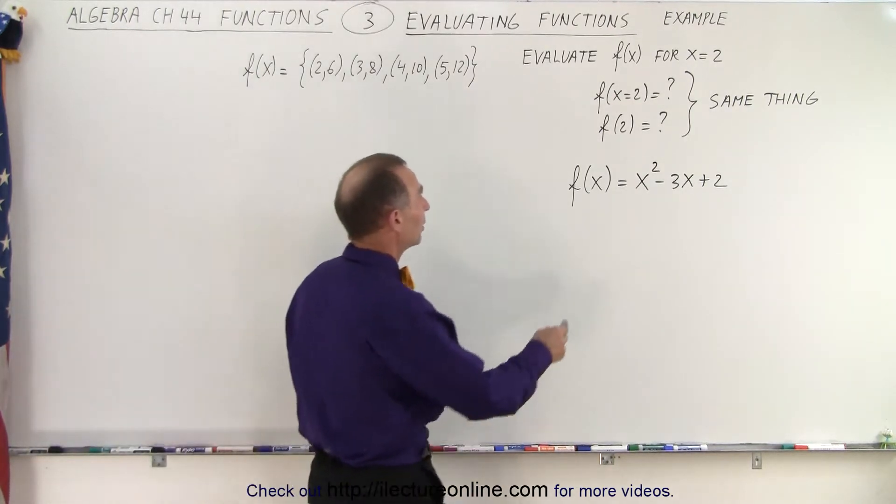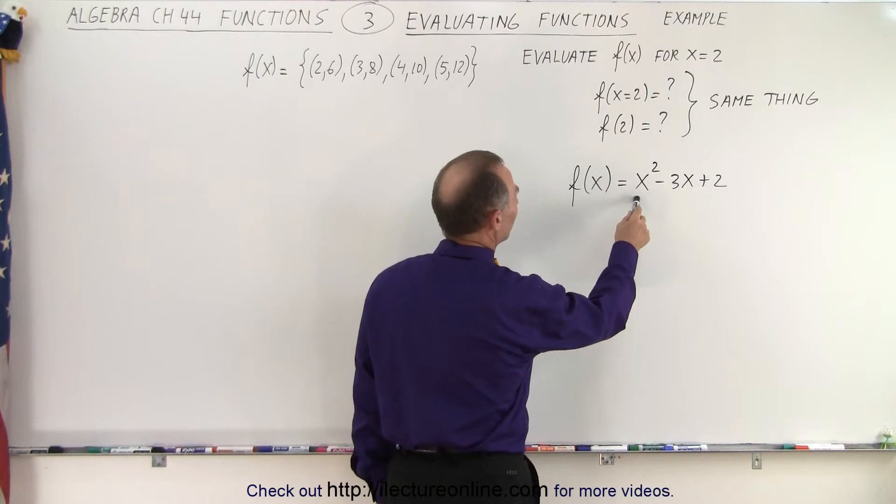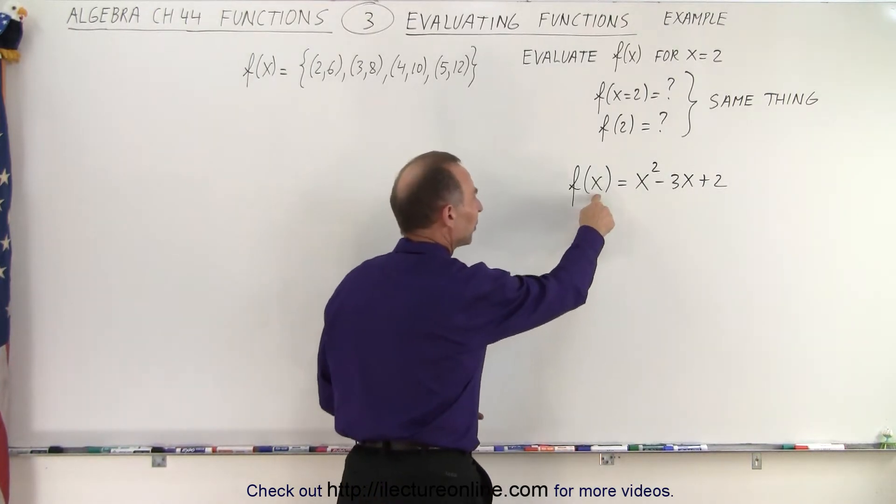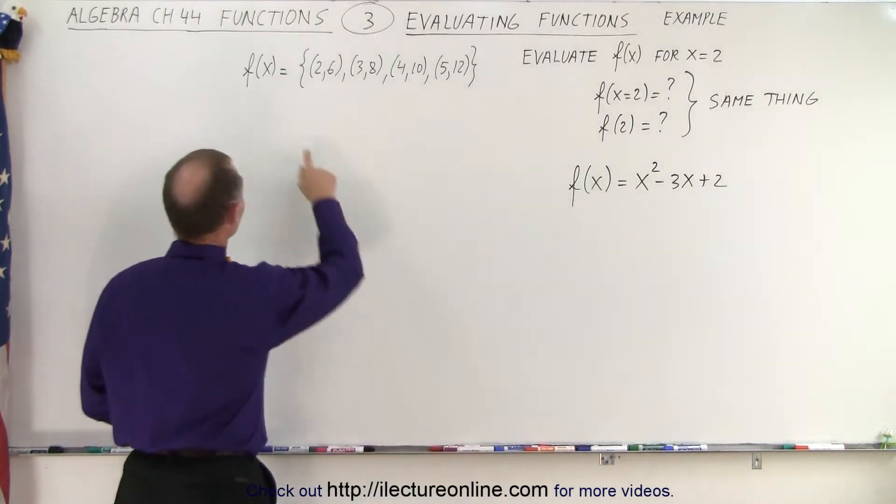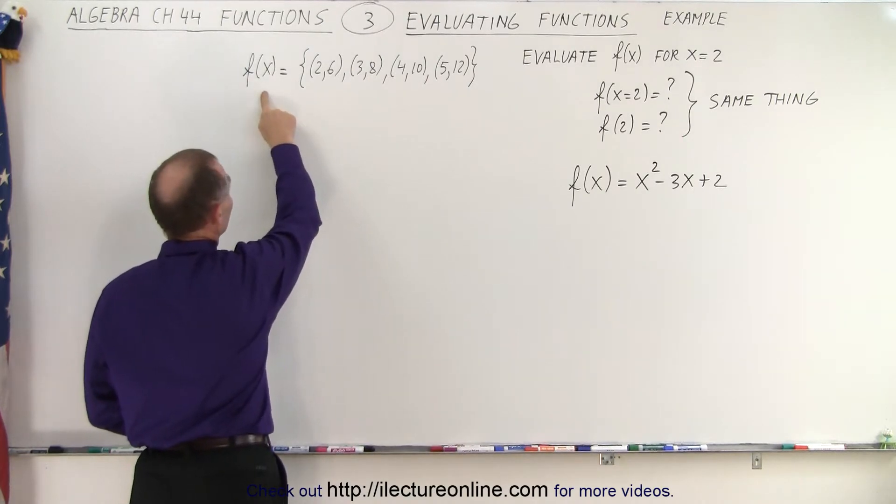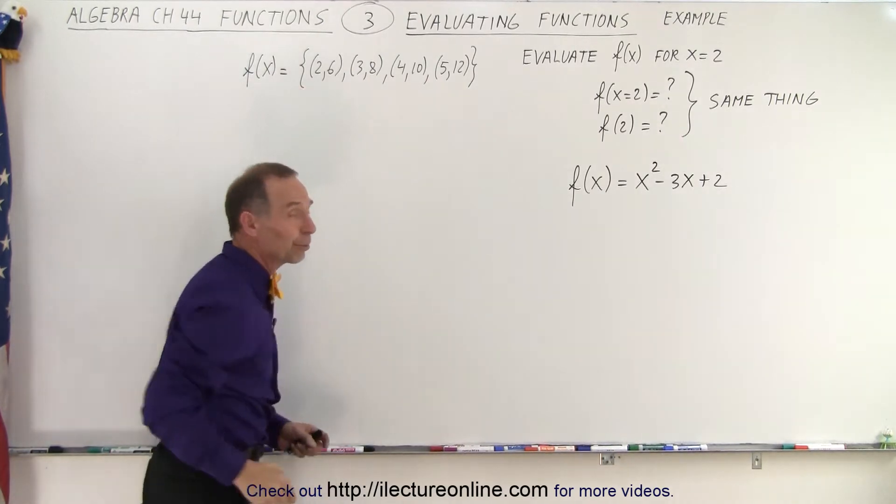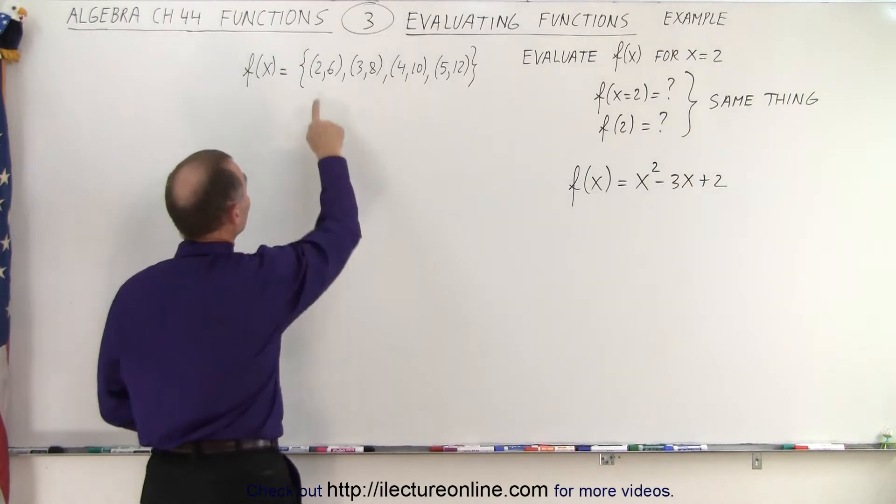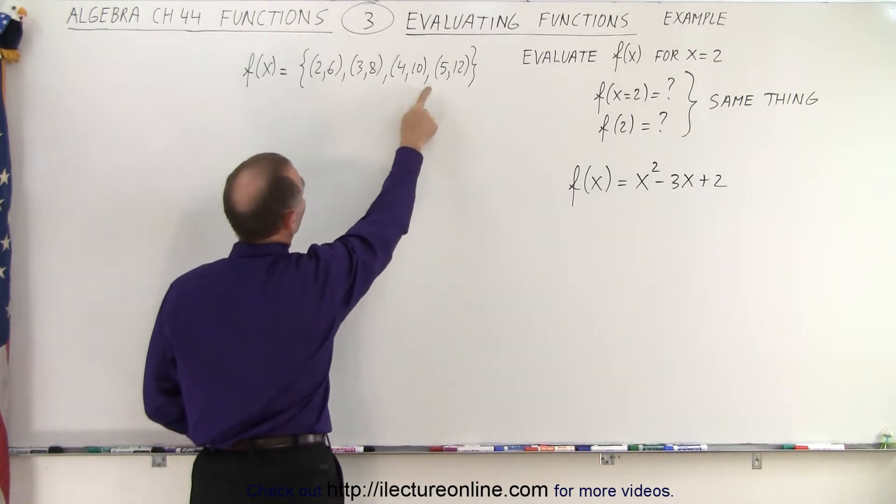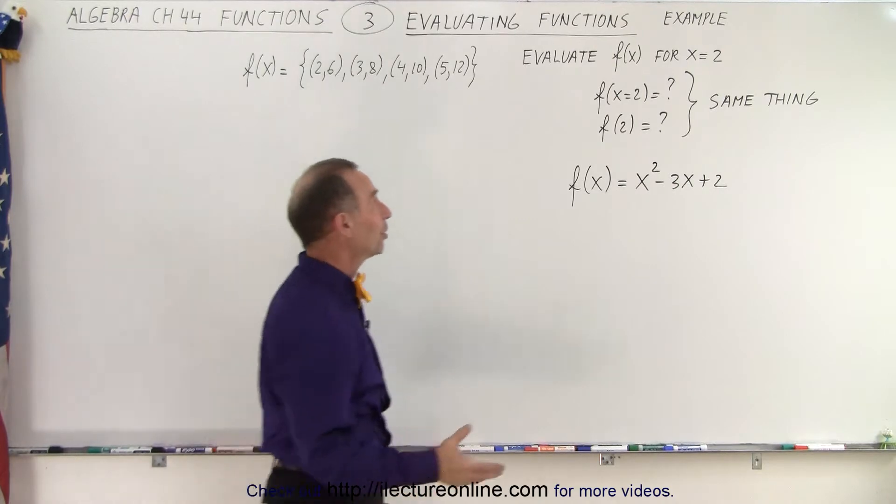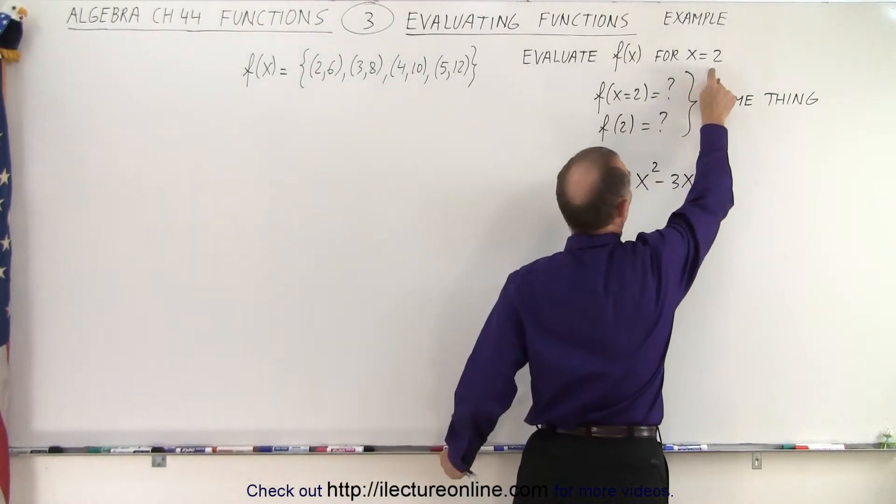We have two functions. Our first function is right here. f(x) is equal to x² - 3x + 2, the function of the variable x. And here we have f(x), or the function of the variable x, is equal to a set of numbered pairs. So here we have (2,6), (3,8), (4,10), and (5,12). We're supposed to evaluate the functions for x equals 2.